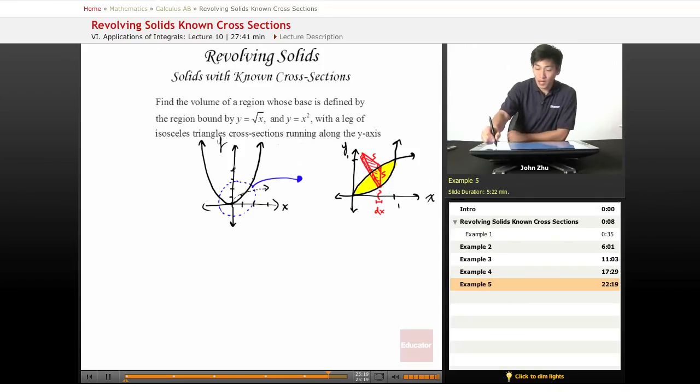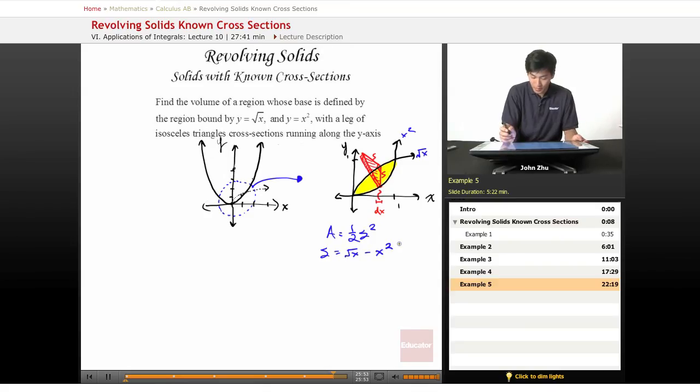Once again, let's find a relationship between this shape and this base. We have area equals one-half base times height, so s squared. Well, s in this case equals the region bound by here, because it's this length defined by this graph and this graph. We know that this graph is square root of x, and this is x squared. So we have s equals square root of x minus x squared.